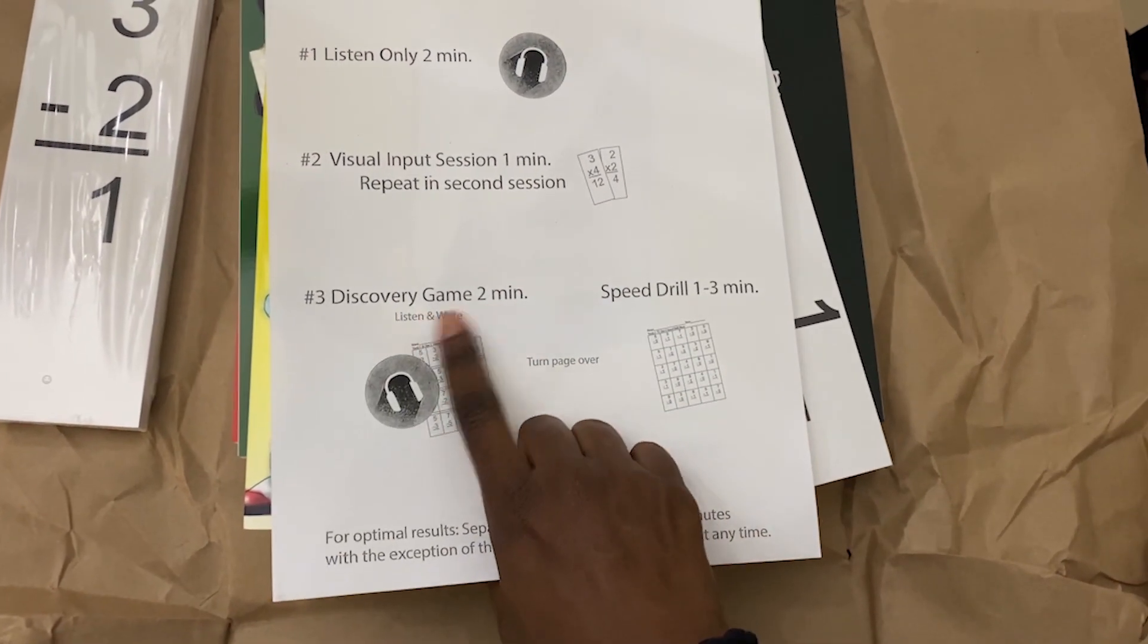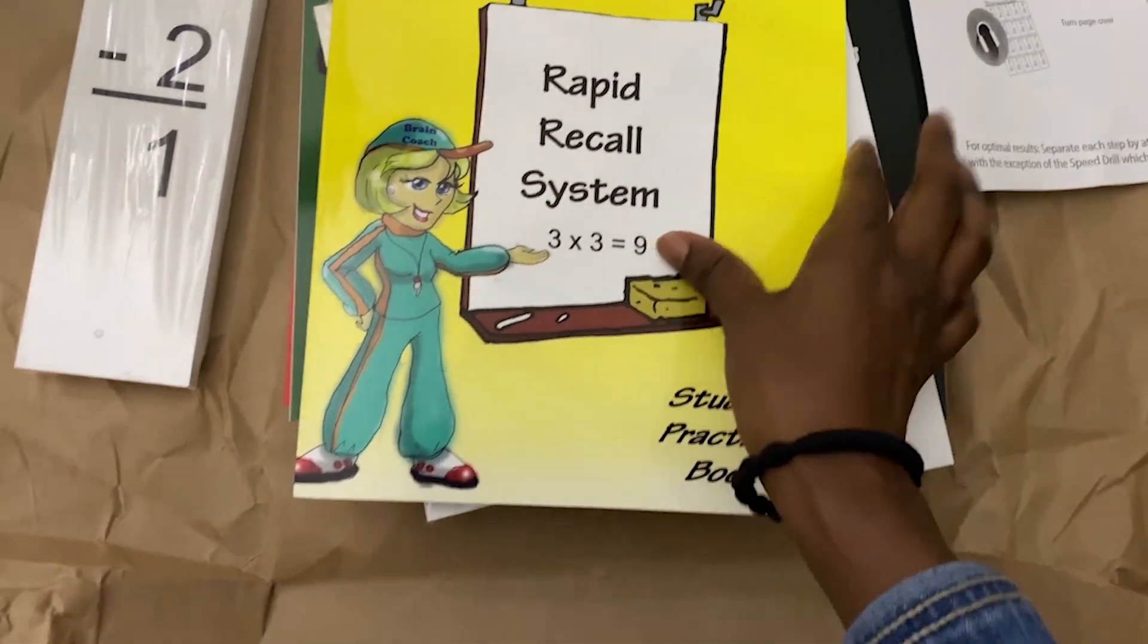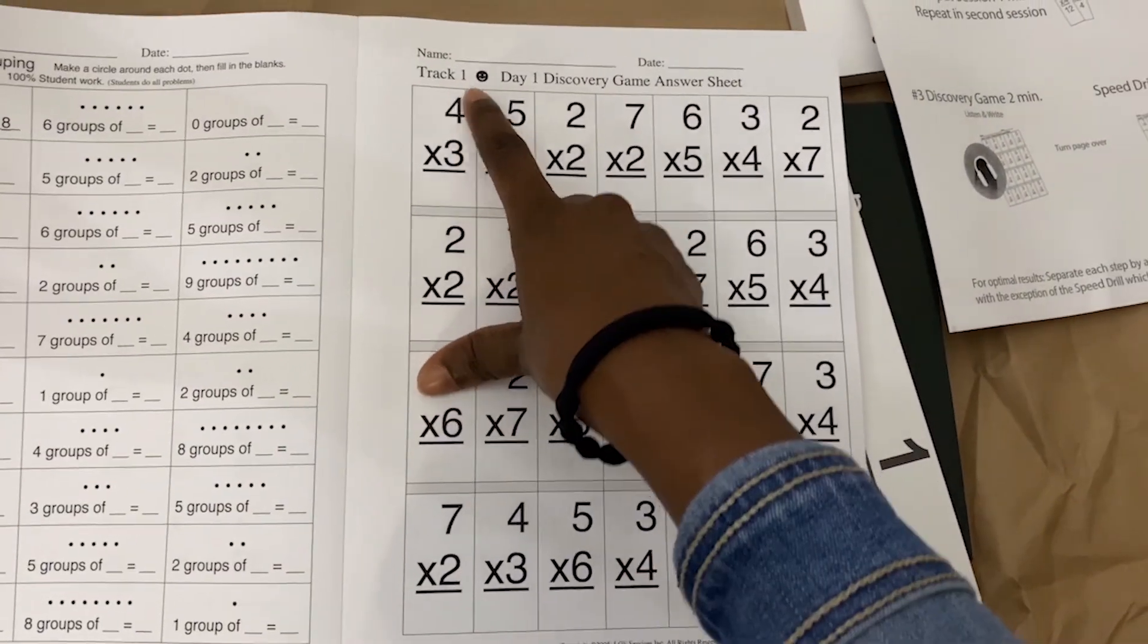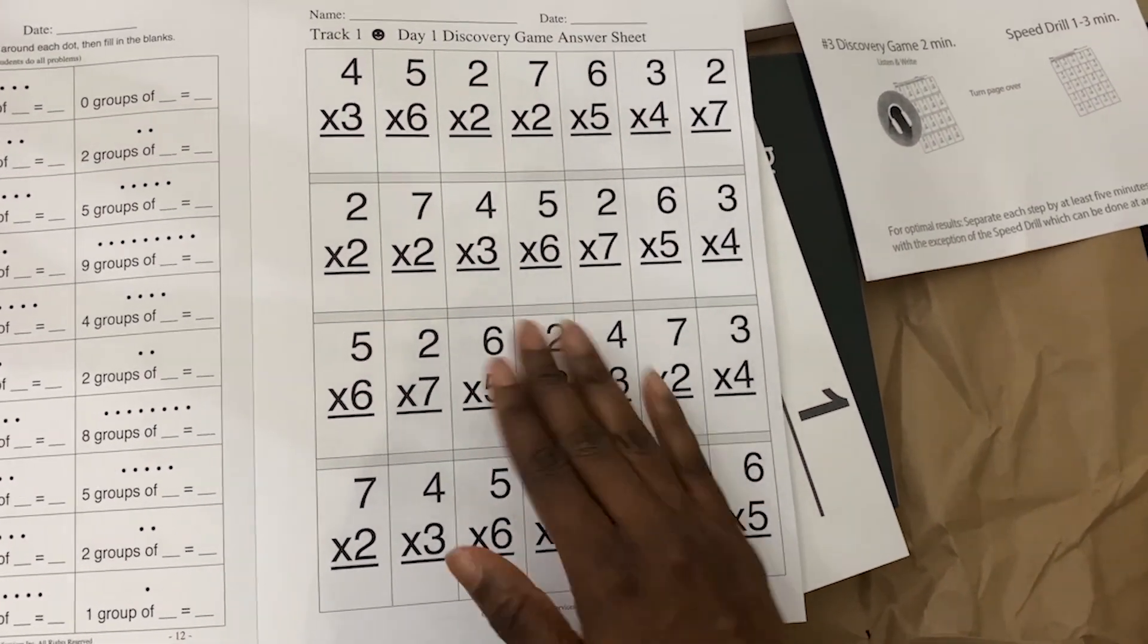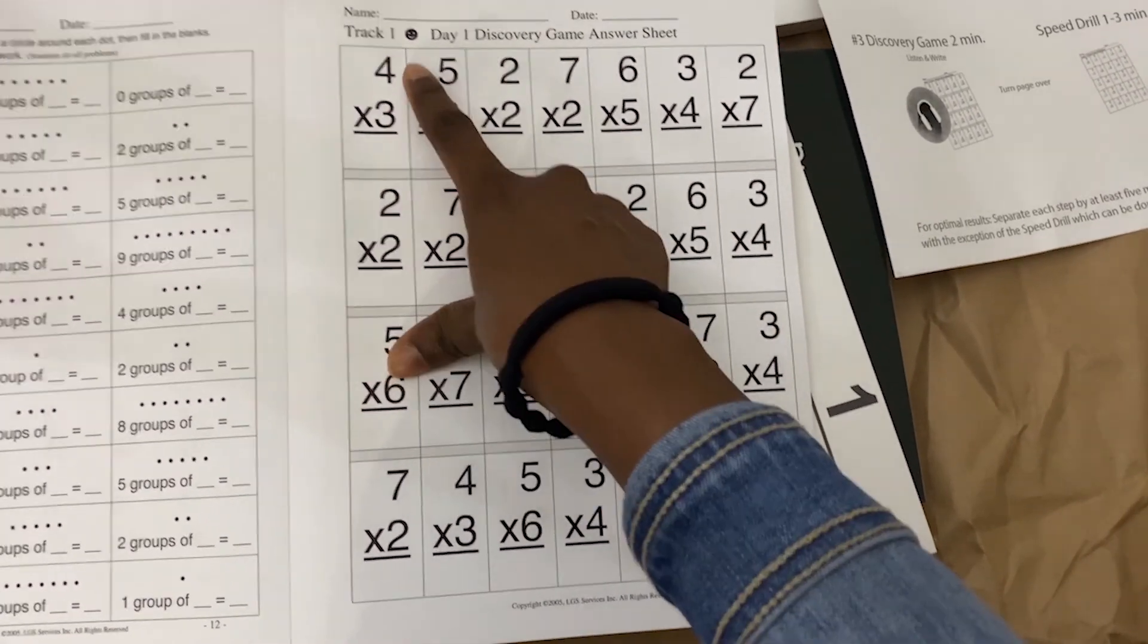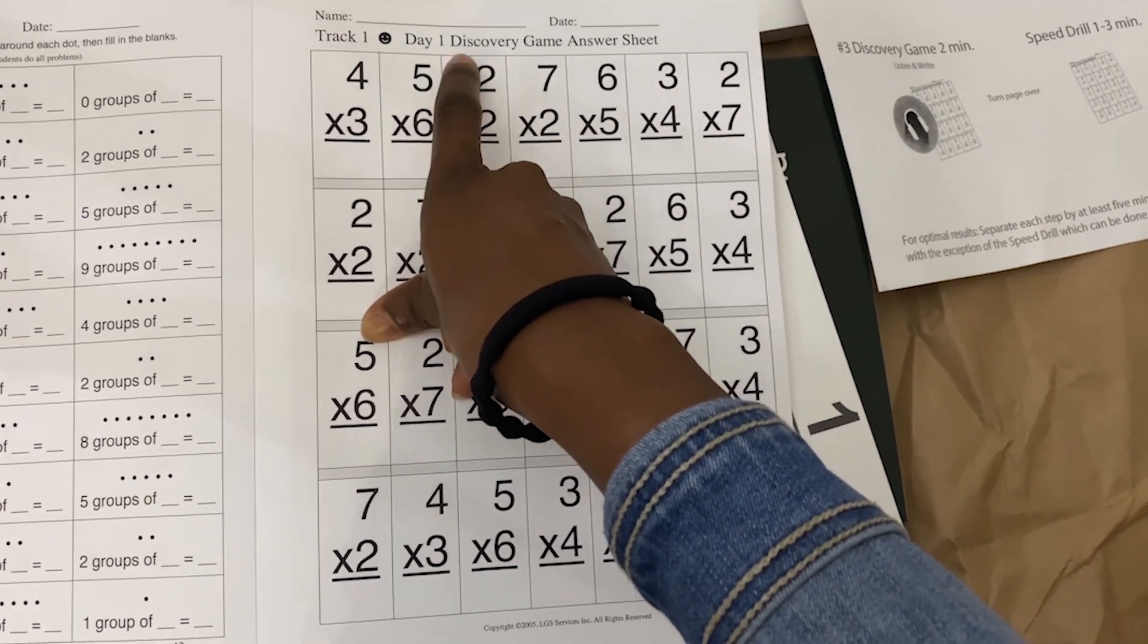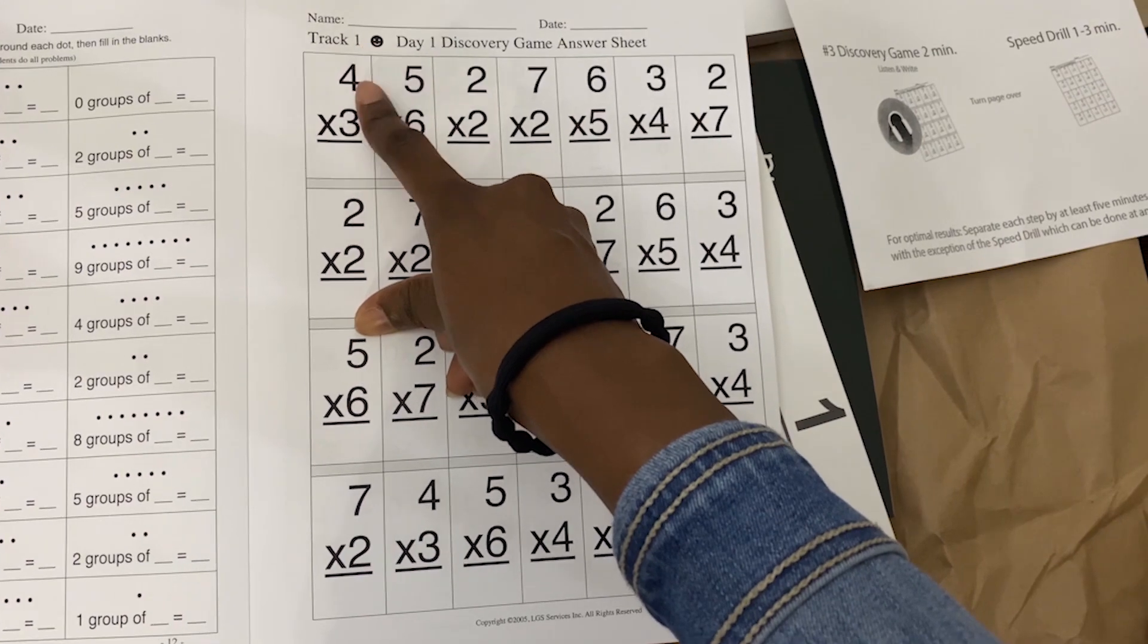Then they'll do the discovery game for two minutes. They'll listen and write. The discovery game is actually in the book. I actually have my children put these in sheet protectors so I can reuse it for the next child, because I don't want to keep buying student books. They'll listen to track one because this is track one, day one.